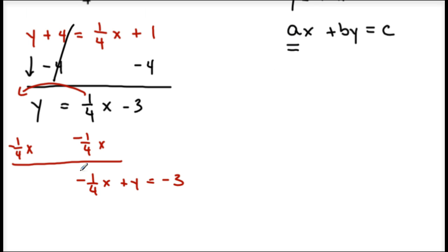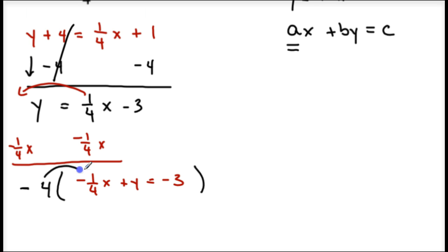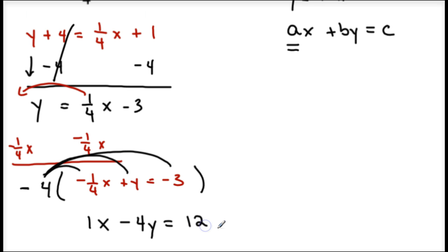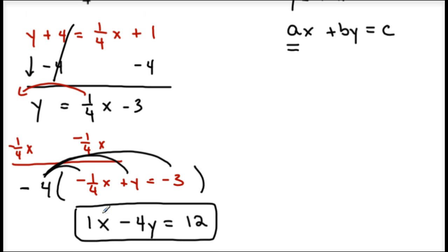My leading coefficient, my a, is negative 1 fourth — I want it to be positive and I don't want a fraction. So I'll multiply the whole equation by negative 4. That gets rid of the negative and the fraction of 1 fourth. Negative 4 times 1 fourth gives me positive 1x; negative 4 times y gives me negative 4y; negative 4 times negative 3 gives me positive 12. Now I have ax plus by equals c, with a positive leading coefficient and no fractions.